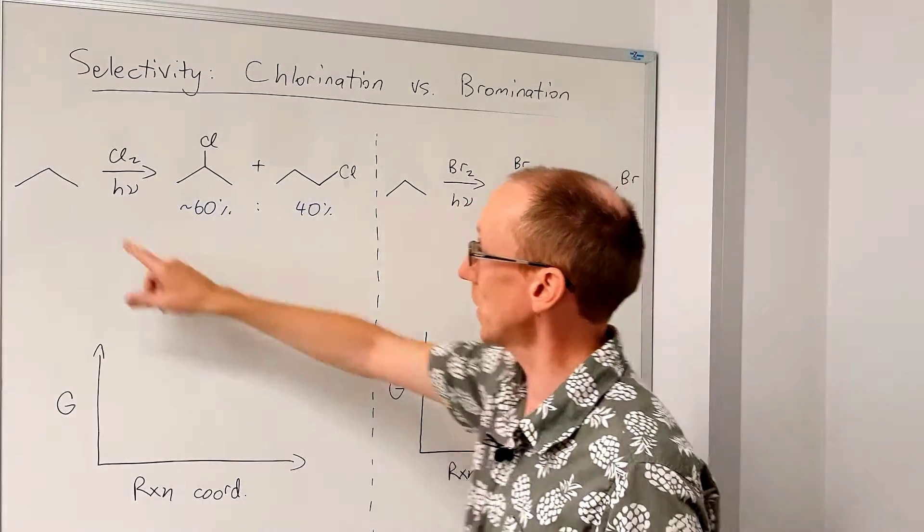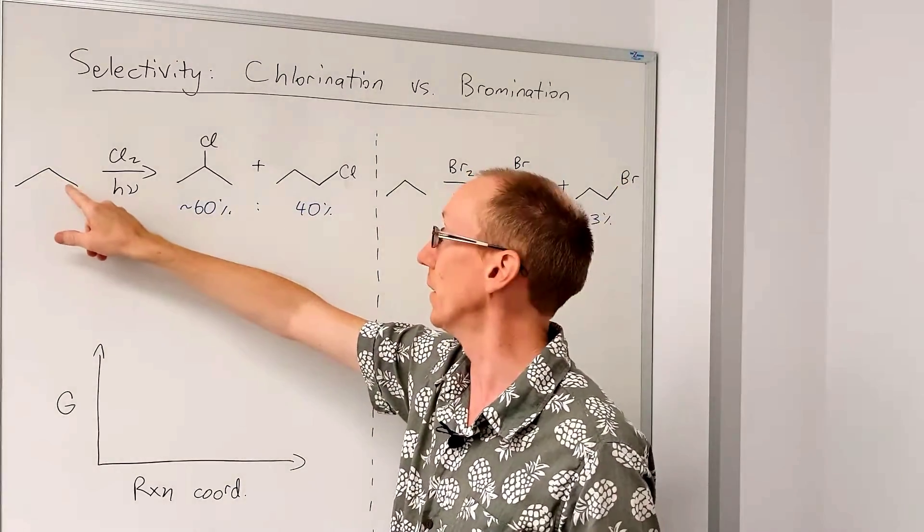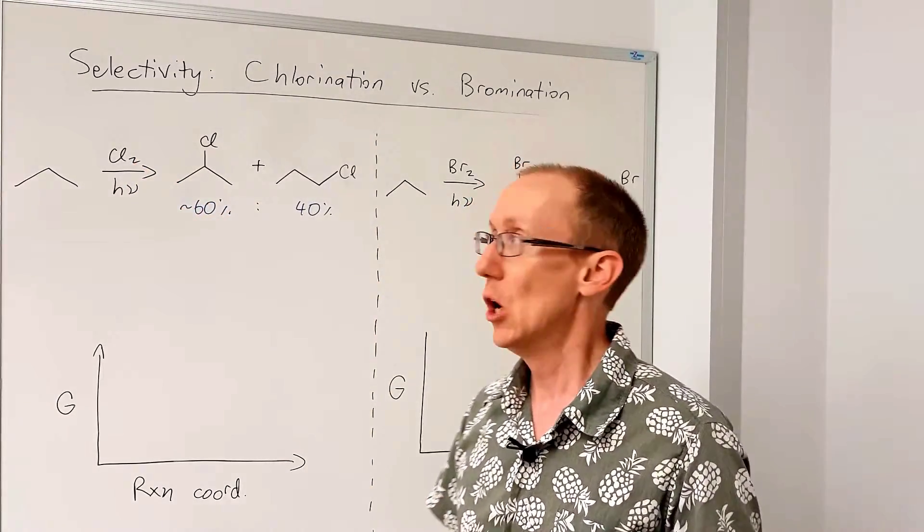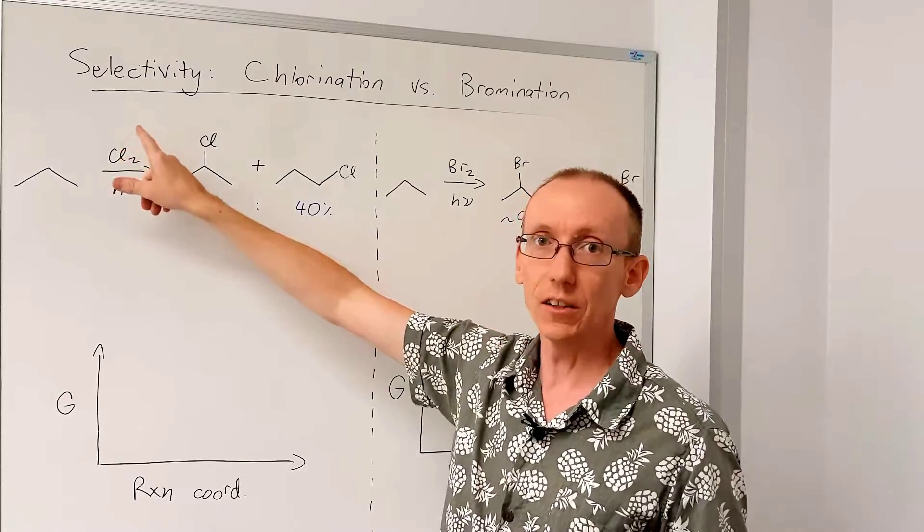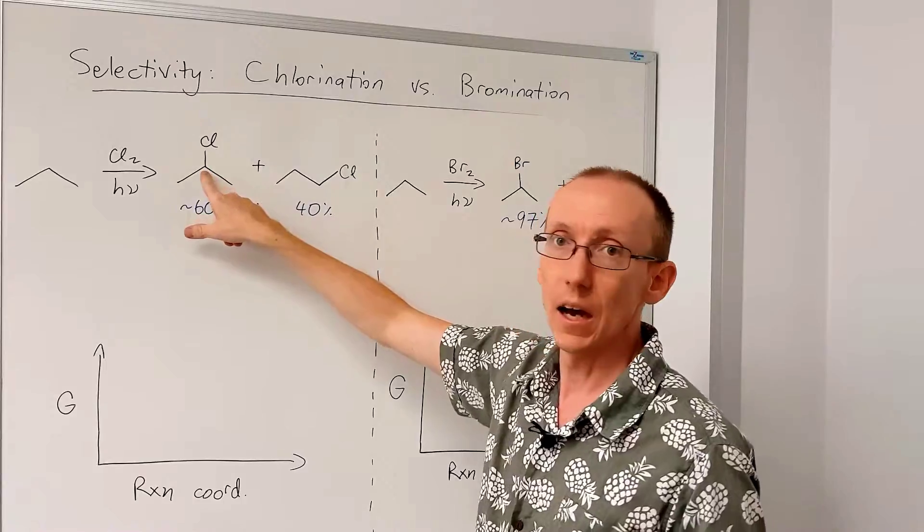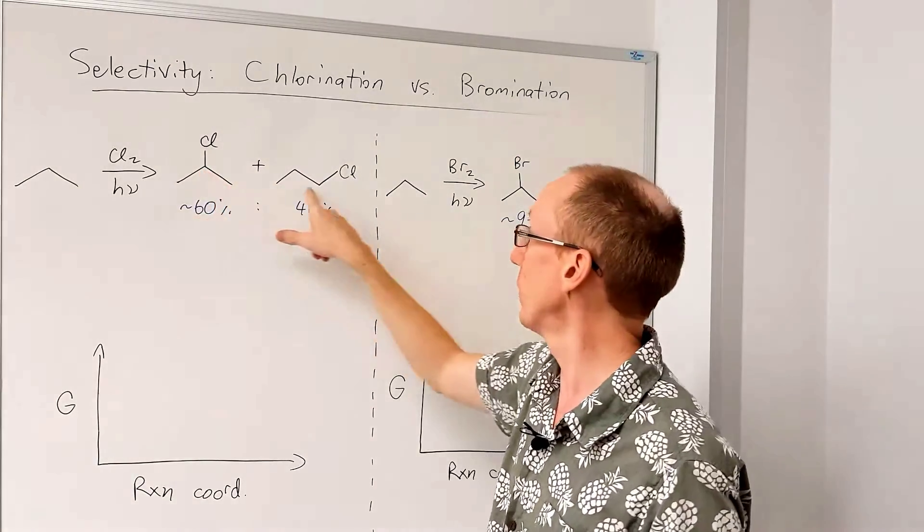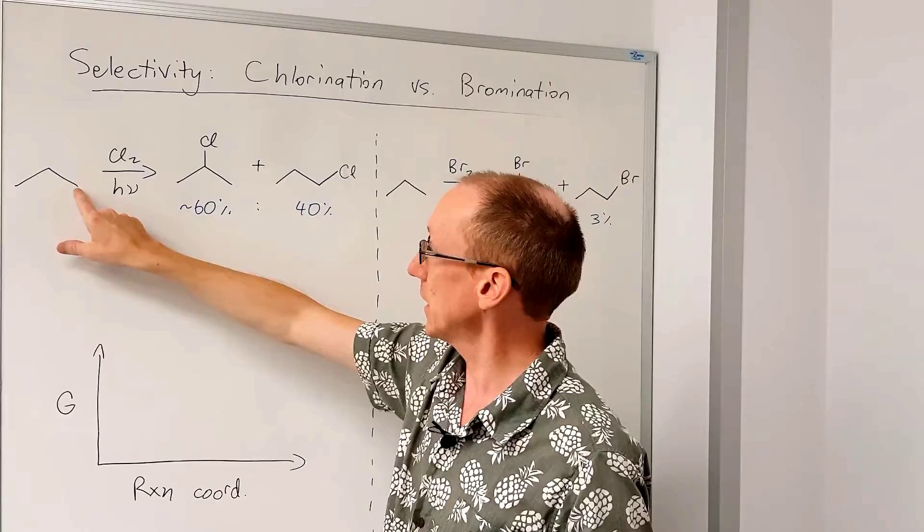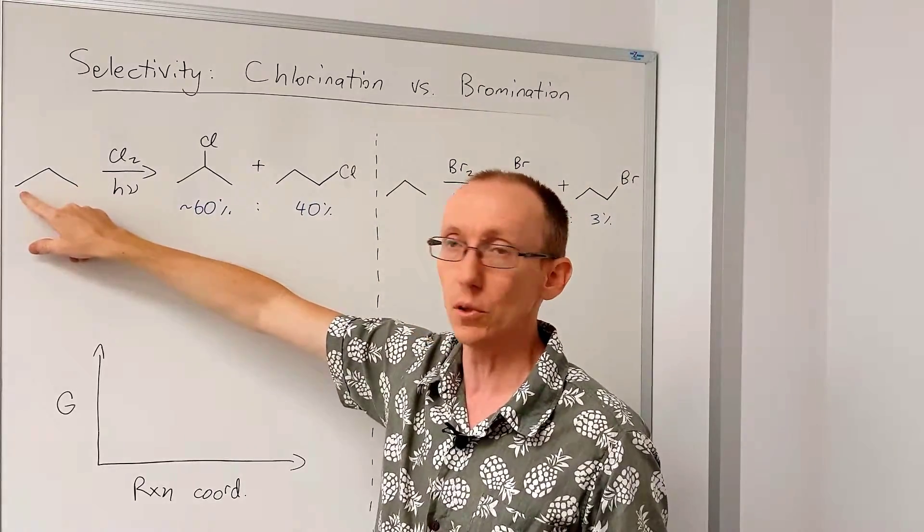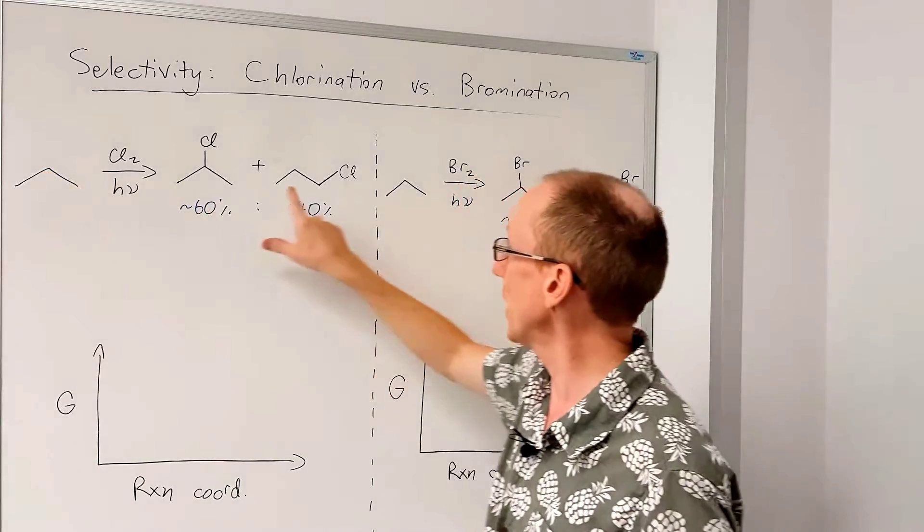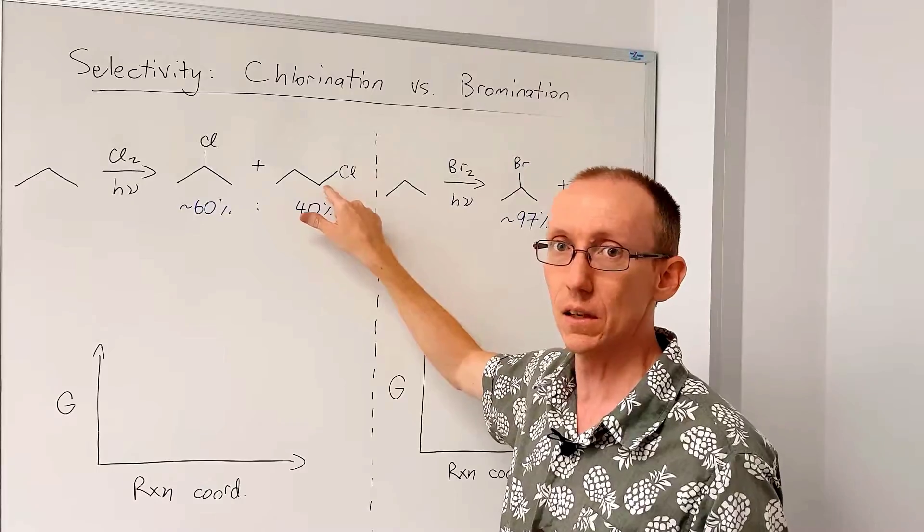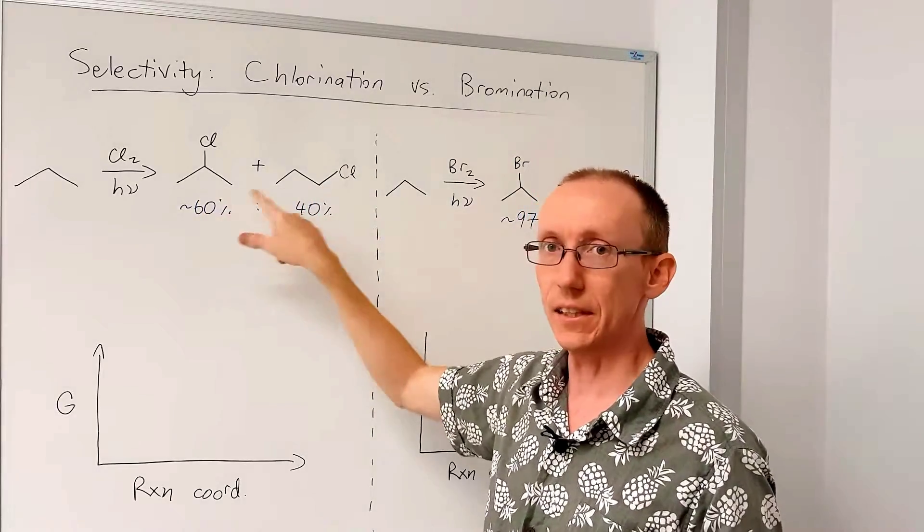Let's look at the case of propane, n-propane. If we chlorinate that under UV conditions, so radical chlorination, we're generating chlorine radicals, and we get around a 60-40 mixture of the secondary alkyl chloride versus the primary alkyl chloride. Now there's six hydrogens at either of these positions that could be replaced with chlorine versus only two here. So we might expect by statistics that there'd be more of this compound than this one. So there is some selectivity.